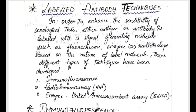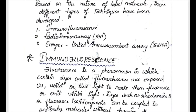Based on the nature of the label that we are using — whether a fluorochrome, an enzyme, or a radioisotope — these labeled antibody assays are going to be of three types. The first type is called immunofluorescence, the second is called radioimmunoassay, simply called RIA, and the third is called enzyme-linked immunosorbent assay, simply called ELISA.